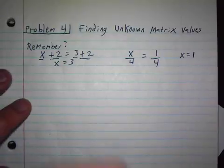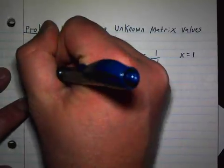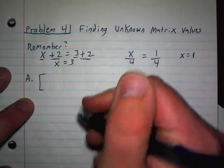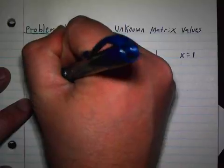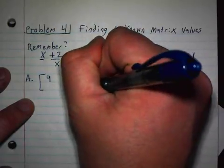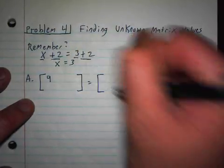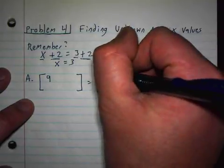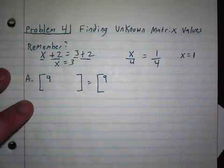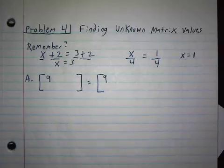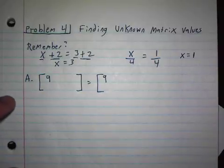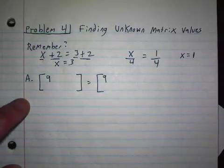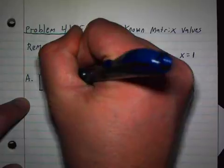For example, if I put 9 here and it's equal to another matrix, guess what needs to be here? 9, right? Otherwise that would make no sense. If that were 8, how could 9 be equal to 8? Now, where this gets tricky is they're going to throw in algebra. So what if this was 3x plus 1?